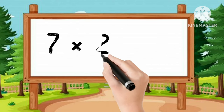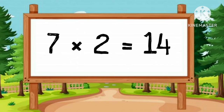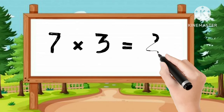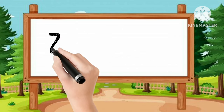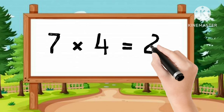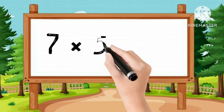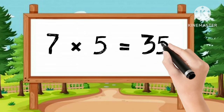Let's learn table of 7. 7-1s are 7. 7-2s are 14. 7-3s are 21. 7-4s are 28. 7-5s are 35.